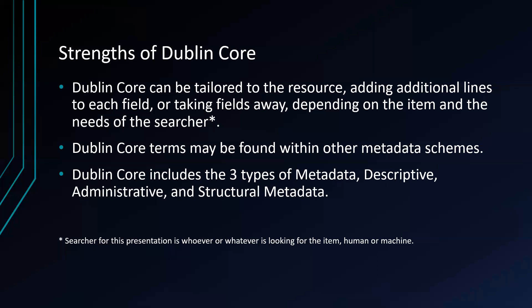You may or may not find Dublin Core within other metadata schemes — it all depends on what the person creating the record uses. Dublin Core includes three types of metadata: descriptive, administrative, and structural. Not necessarily all at once — it depends on the item and the resource, as well as the searcher, whether that be a person or a machine.